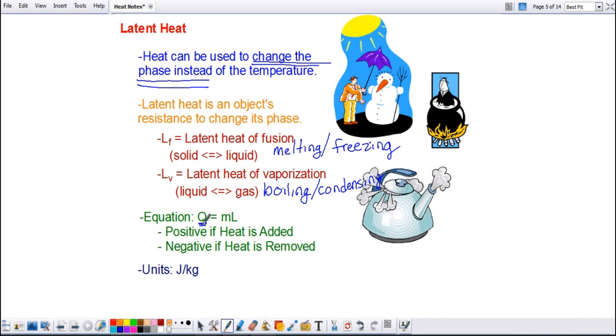If it is condensing, if it's going from a gas back into a liquid, then we need to use the latent heat of vaporization, and if it's going from a gas back to a liquid, then we are removing heat. So it's this equation, but you have to determine which latent heat to use, and you have to determine if it's positive, if heat's being added, or if it's negative, when heat is being removed. The units are joules per kilogram.